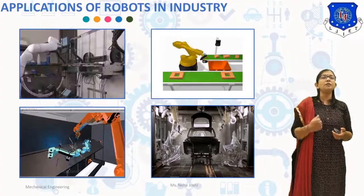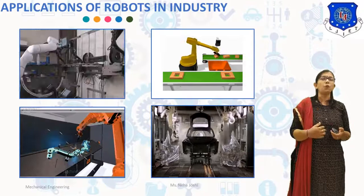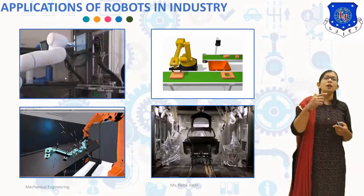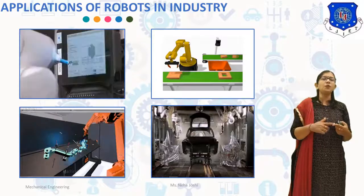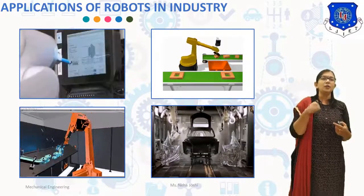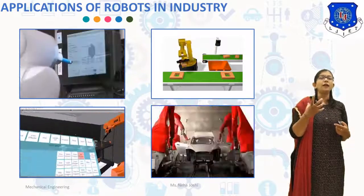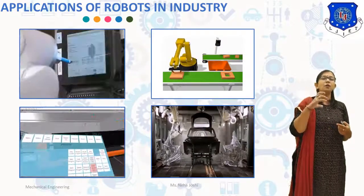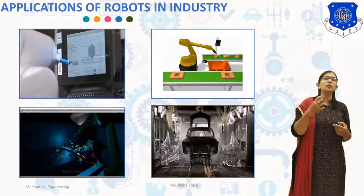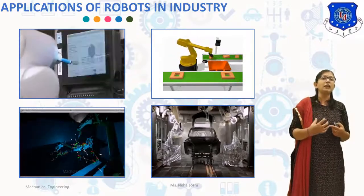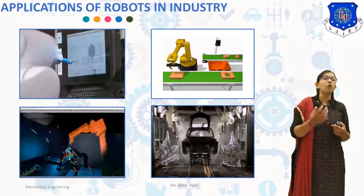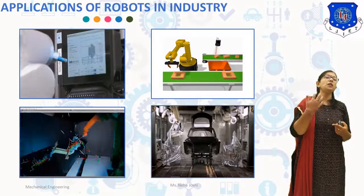Here you can see different applications of robots: robots used in machining, robots used in spray painting as shown in this animation, robots used in welding with different tools, and material handling robots showing how they handle materials. These are the different applications of robots used in industry.